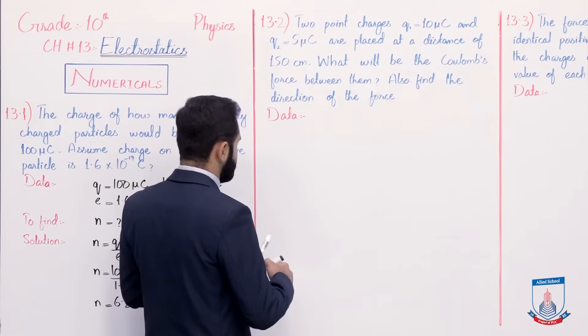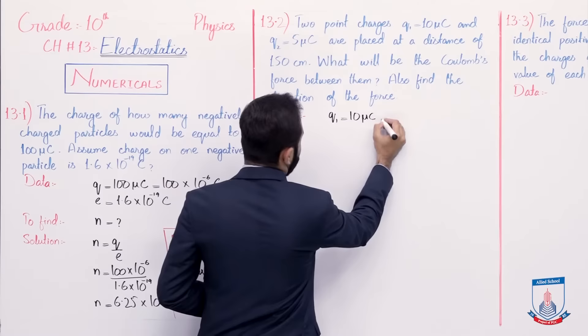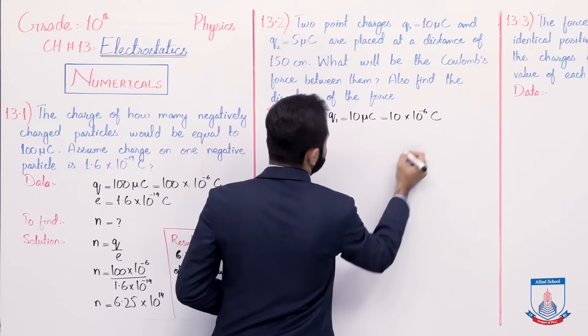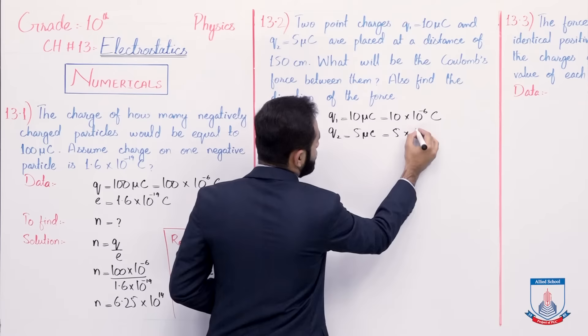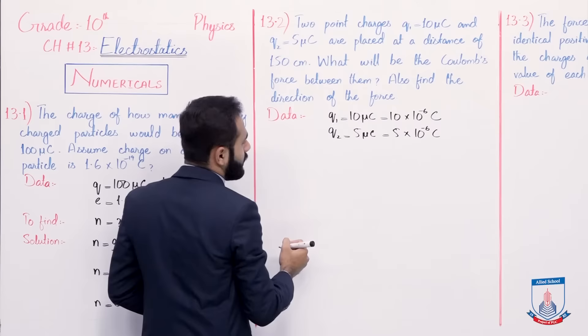q1 is equal to 10 micro coulomb, that is 10 multiplied by 10 raise to the power minus 6 coulomb. Micro ko hum ne replace kar diya 10 raise to the power minus 6 se, uski value se. So q2 charge that is 5 micro coulomb, again aap micro ki jagah likh dijiye 10 raise to the power minus 6 coulomb.